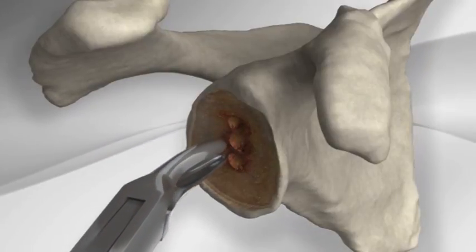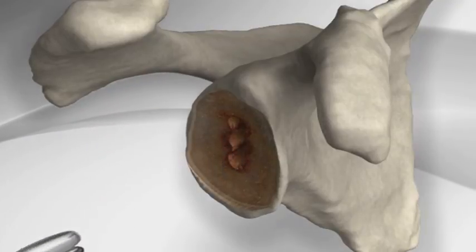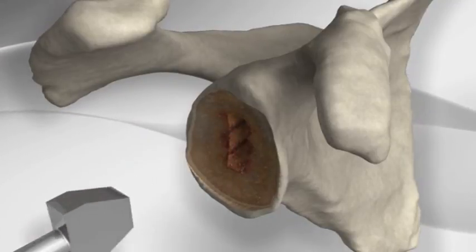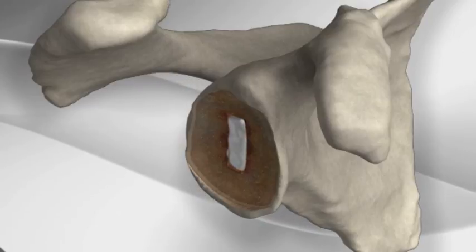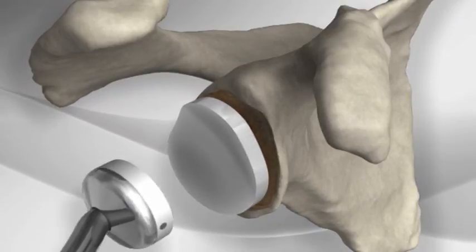The bone between the holes is removed and a punch is inserted to convert the hole into the shape of a triangle. Cement is placed in the hole of the glenoid and on the back of the prosthesis, and the new glenoid joint surface is cemented into position.